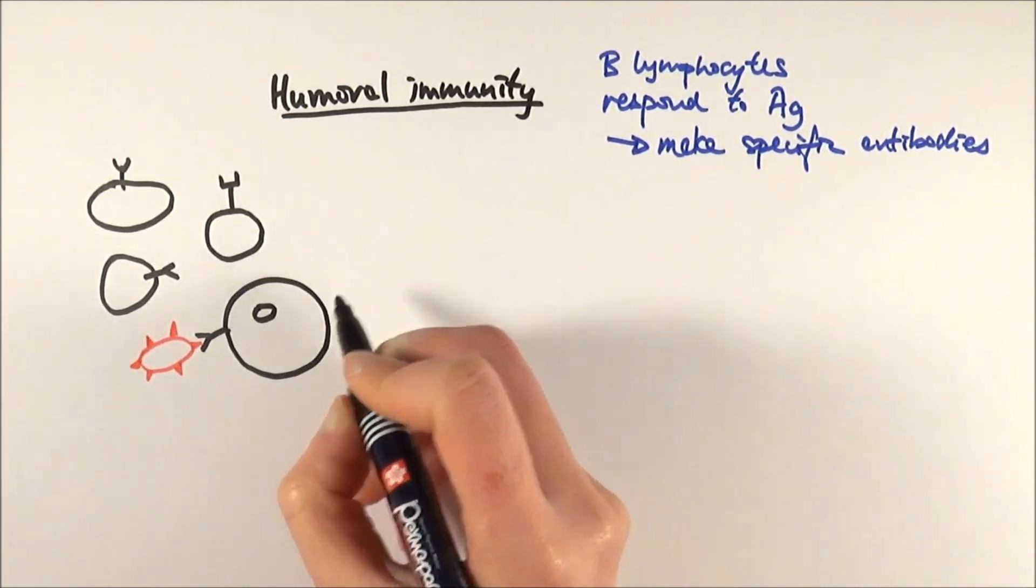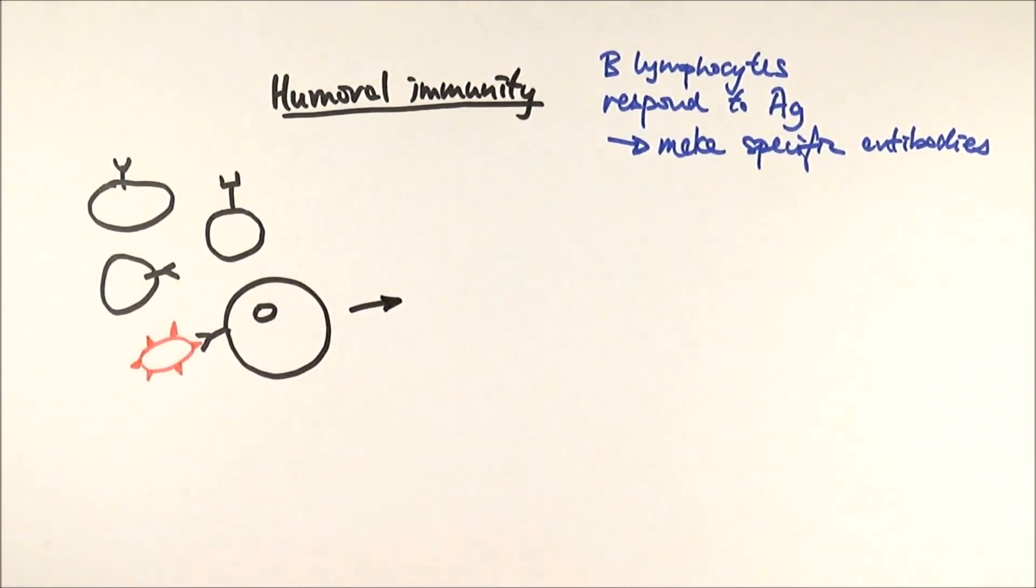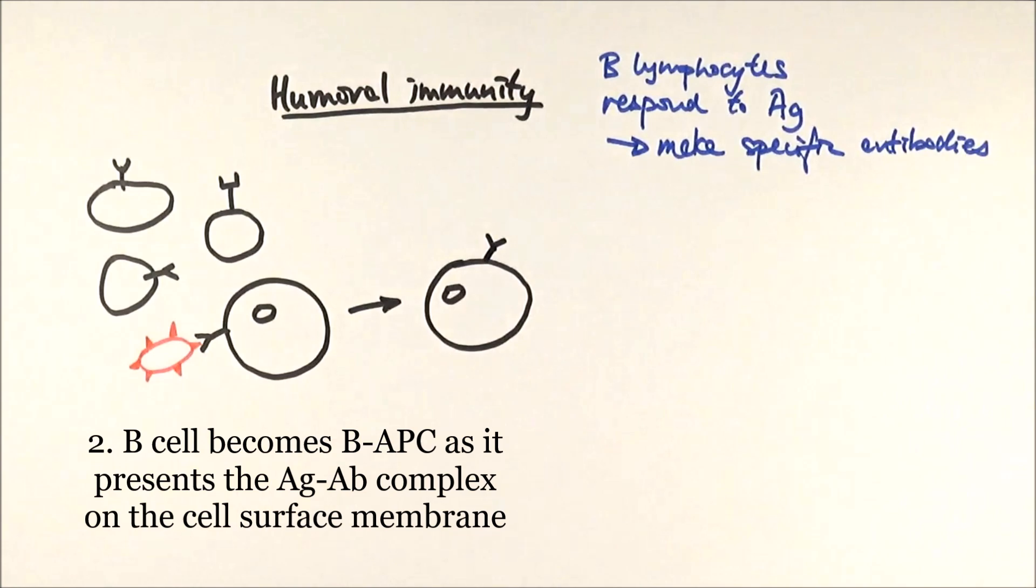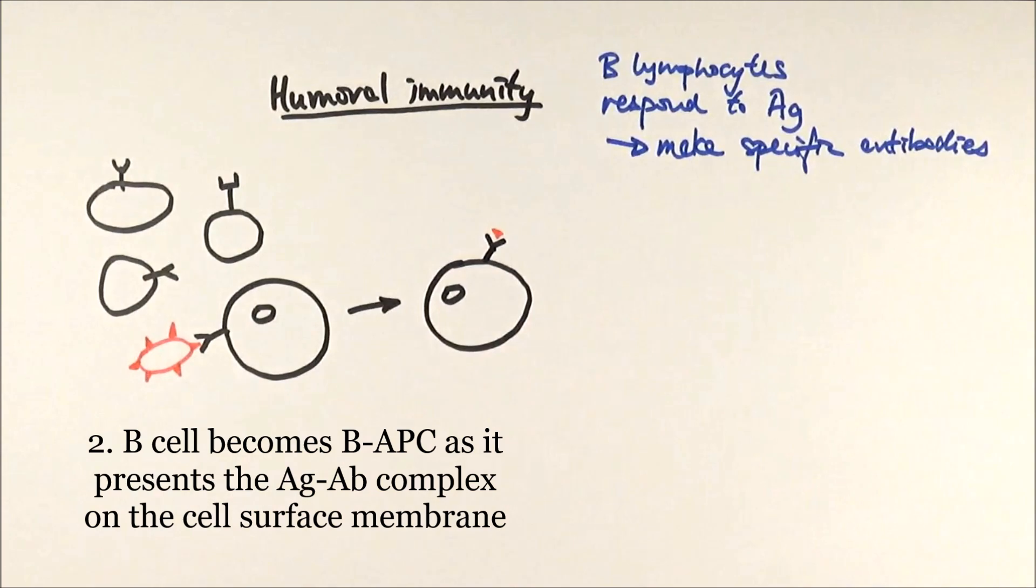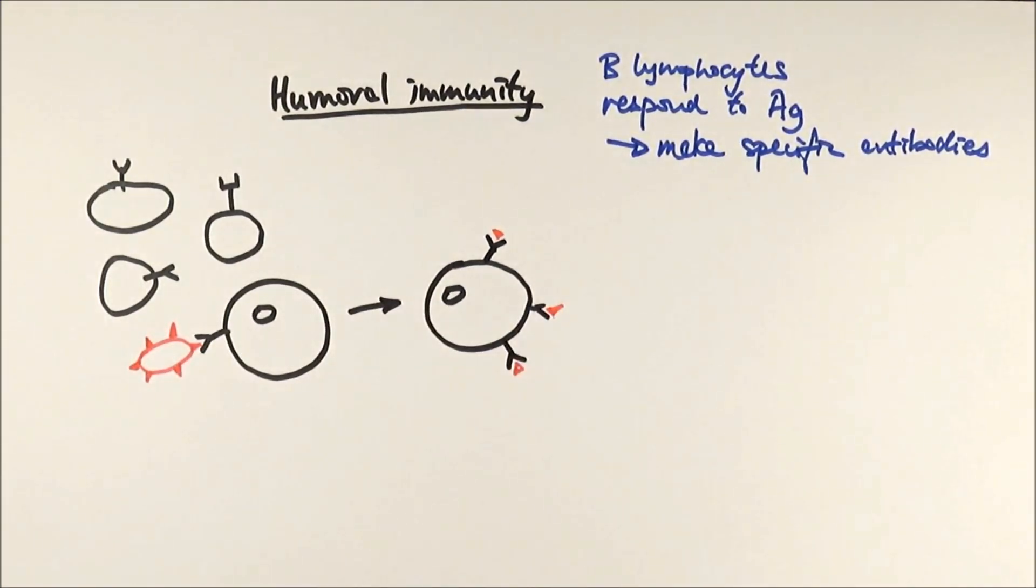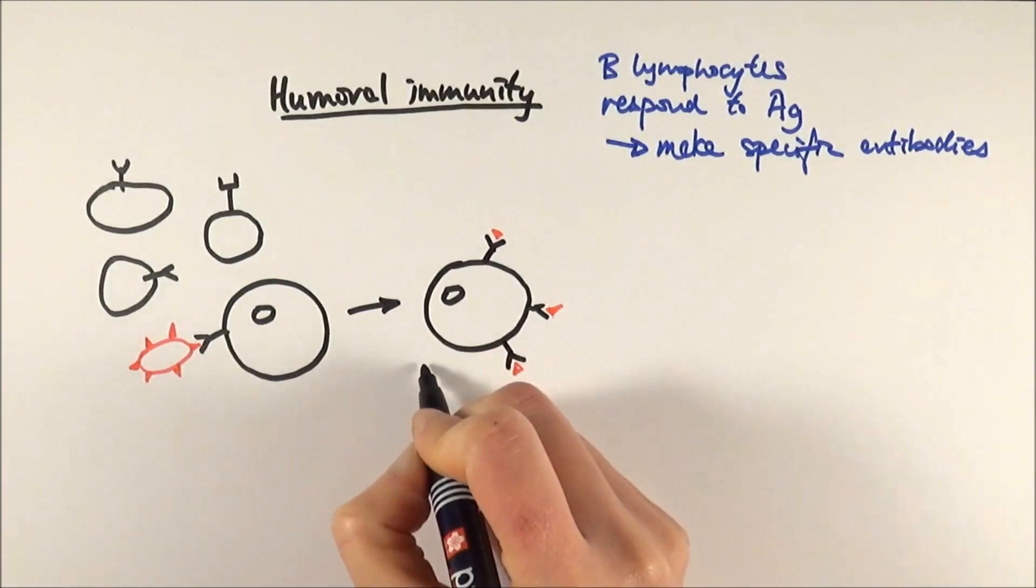So almost like a macrophage. Once it engulfs it and processes it, it becomes an antigen presenting cell. Rather than using the MHC complex, it just has the antibody with the antigen on the surface that is bound. So it becomes like this. This is when we say that the cell becomes a B antigen presenting cell.